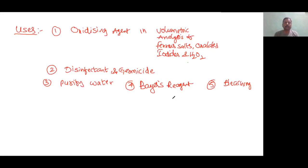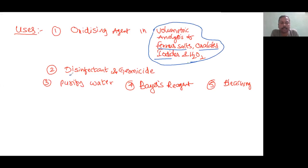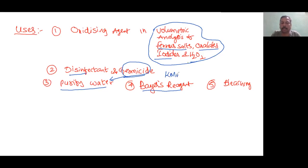Uses of KMnO4: It is used as an oxidizing agent in volumetric analysis to estimate ferrous salts (Fe²⁺), oxalates (C2O4²⁻), iodides (I⁻), and H2O2. It is used as a disinfectant and germicide — the nascent oxygen kills germs, especially in water purification. In organic chemistry, alkaline KMnO4 is known as Baeyer's reagent, used to convert alkenes to vicinal diols. It is also a bleaching agent.